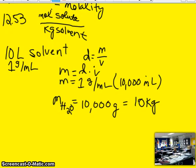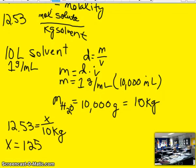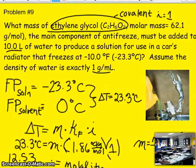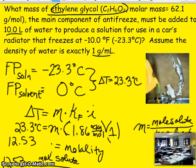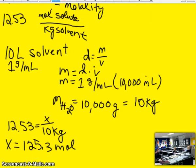So the mass of our water is equal to 10,000 grams, which is the same as 10 kilograms. So now I can go ahead and plug into the molality formula here. We have the molality 12.53. We do not know our moles of solute, but we know we have 10 kilograms of solvent. So our moles of solute are going to be 125.3 moles of that crazy solute, which is ethylene glycol.